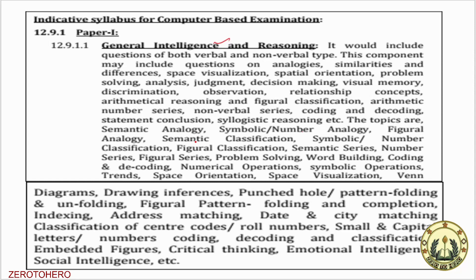You can include both verbal and non-verbal topics. Topics include analogy, similarity, difference, and spatialization. Code and decode, slash, and Venn diagram are also covered. There are questions on critical thinking and strategies. Non-verbal series, code and decode, and number-based questions are part of the reasoning section. If you have a screenshot, you will find reasoning topics listed there.